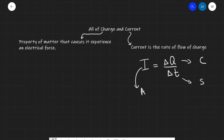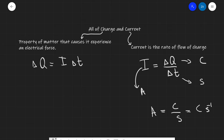The amp can also be said to be equivalent to coulombs per second, which you could write as coulombs s to the power of minus one. If we rearrange this equation for charge, we get charge equals current multiplied by time. Looking at the units: coulombs, the unit of charge, equals amps multiplied by seconds.